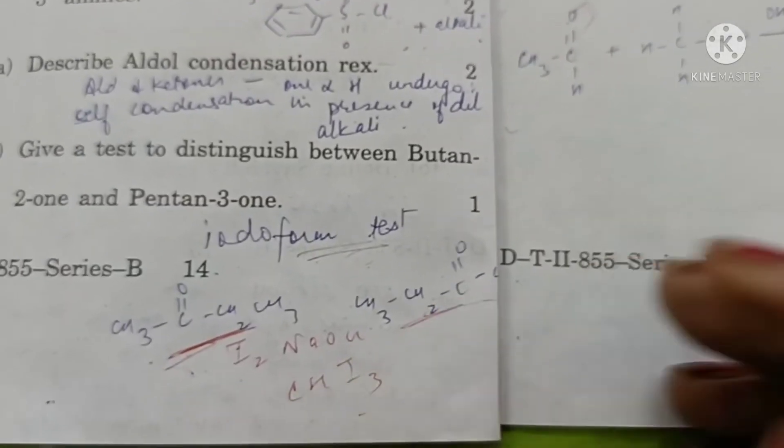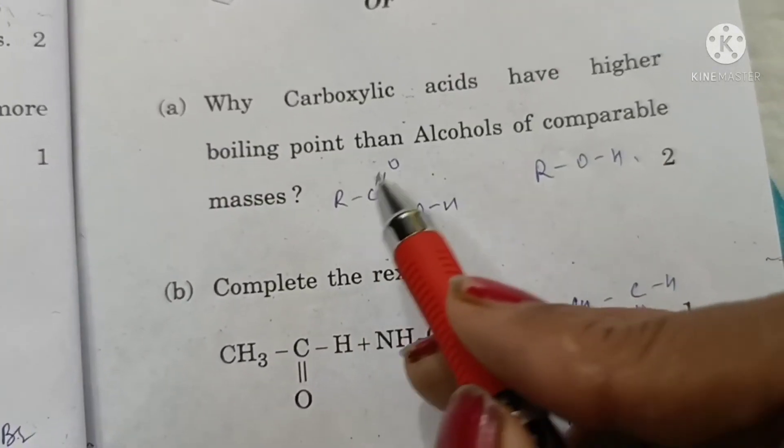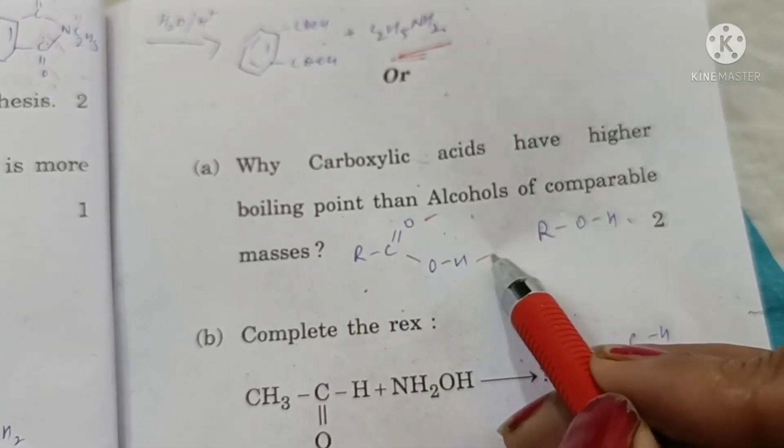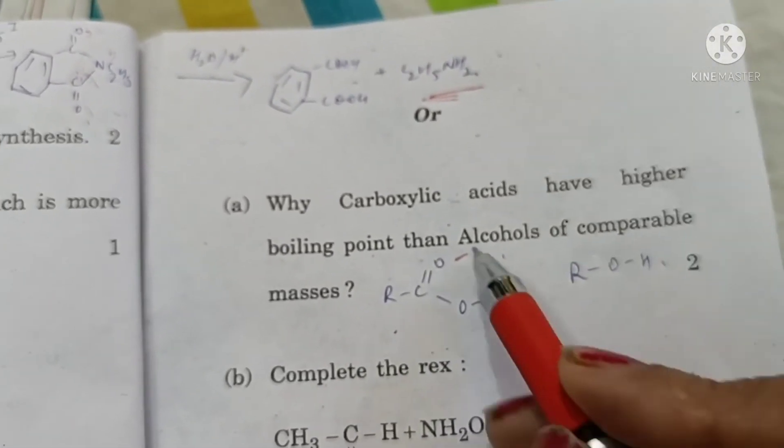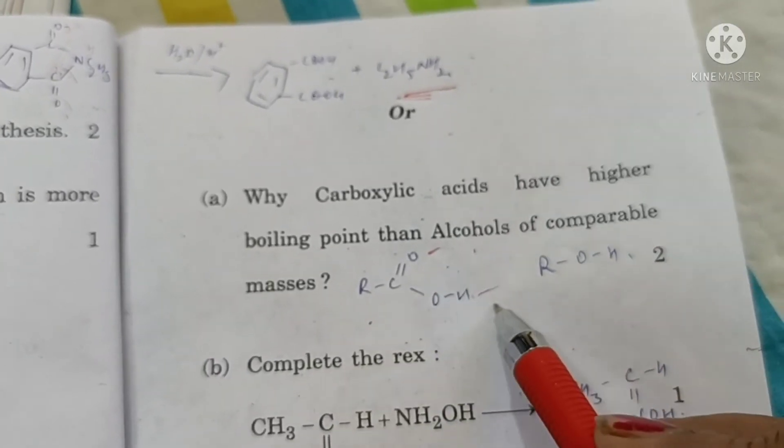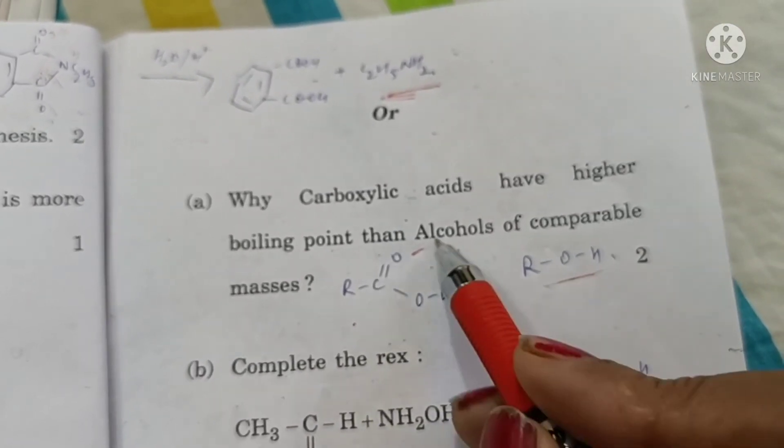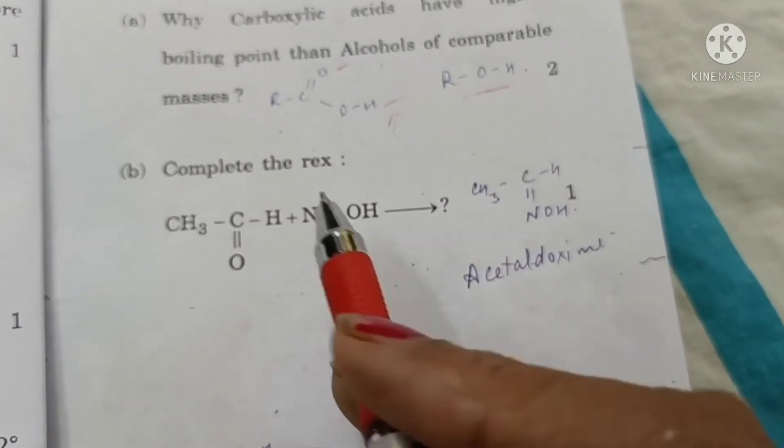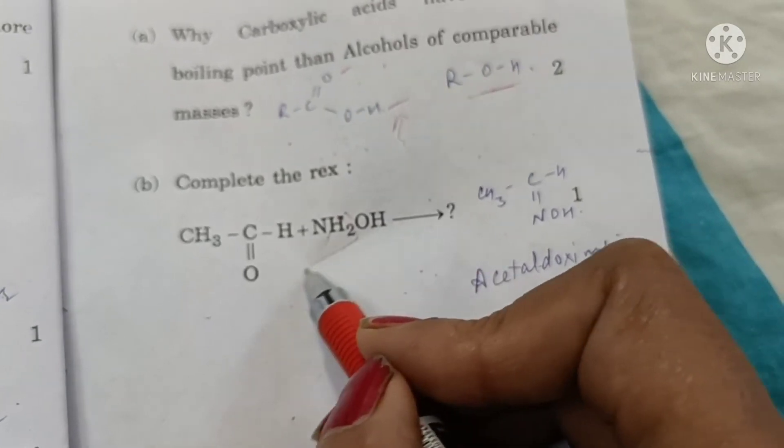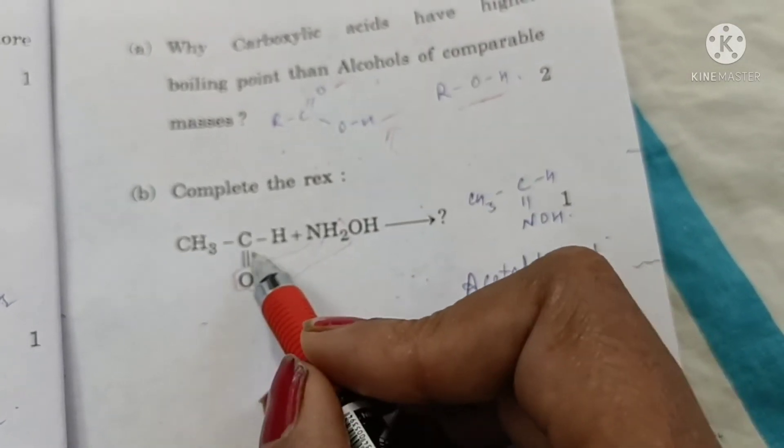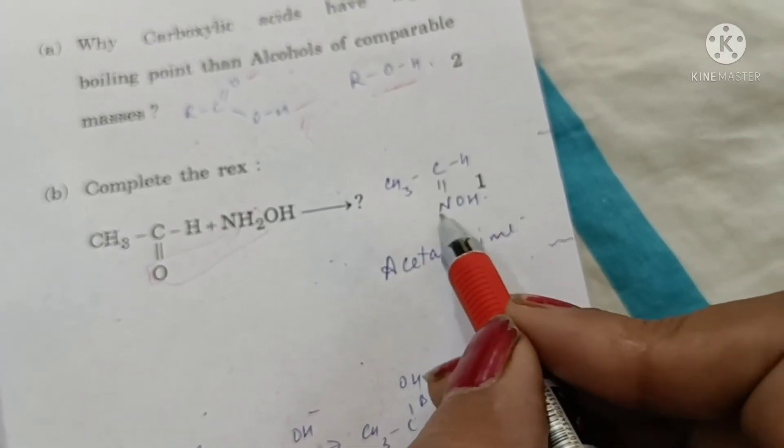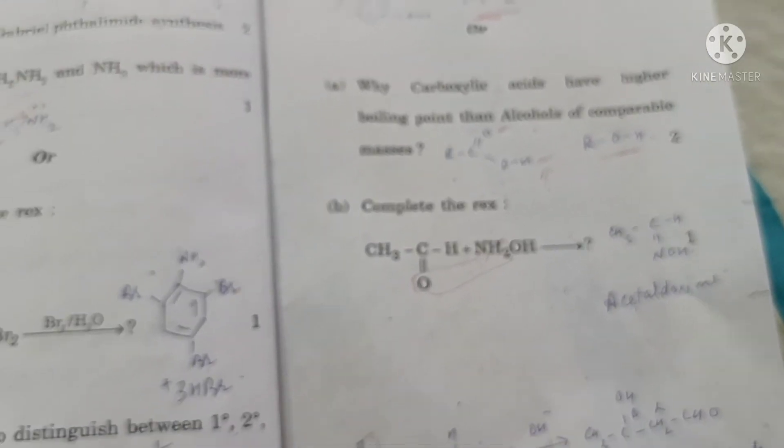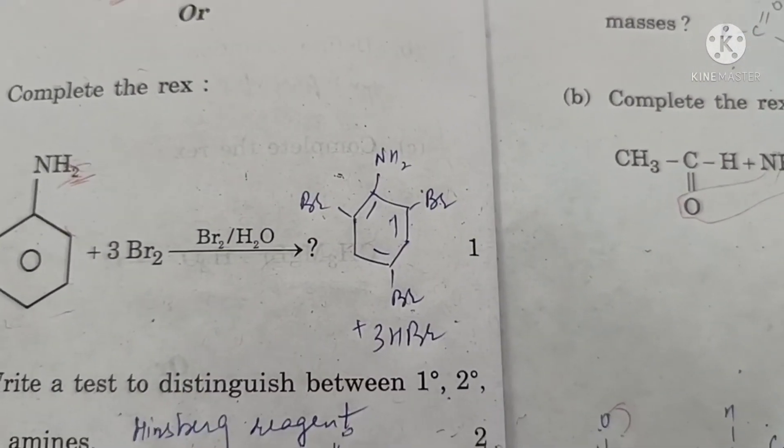When it reacts with iodine in the presence of NaOH forms iodoform CHI3 yellow colored precipitates. This test is given by butane-2-one but not by pentane-3-one. Why carboxylic acids have higher boiling point than alcohols? It is because the number of hydrogen bonds formed by carboxylic acid is greater. There are two hydrogen bonds here whereas only one here. So more energy is needed so boiling point is higher. In this reaction the two hydrogens of hydroxylamine combine with oxygen to form water and it joins by a double bond with nitrogen and acetaldoxime is formed.